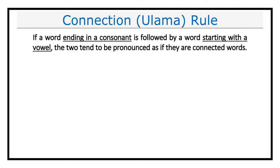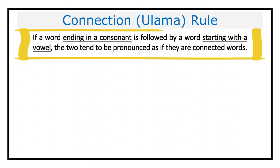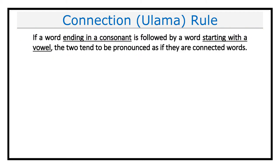Before explaining the rule, let me note that connection rule is a phonetic rule, which means it's a rule about how you pronounce words and letters in a specific language. Connection rule specifically is a rule specifying how you pronounce words in a sentence that meets specific conditions. So what is the rule about?